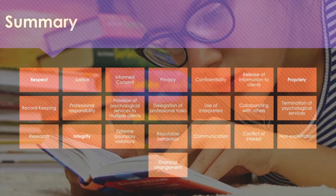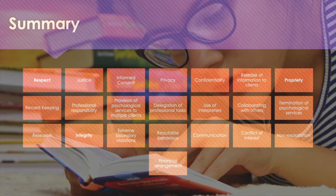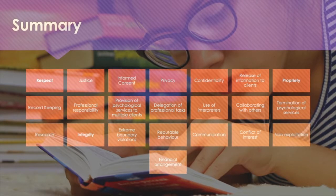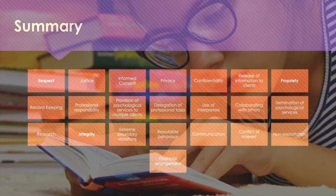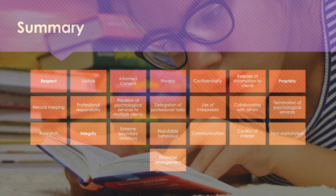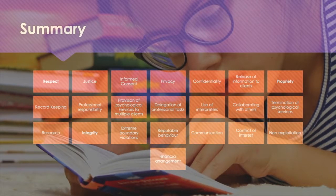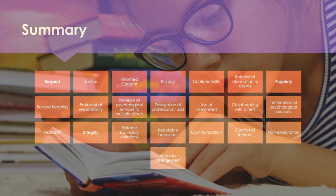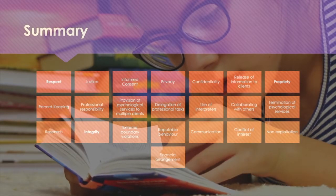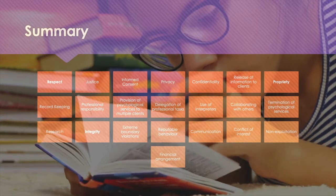The code dictates how one interacts with clients, how one conducts themselves, and addresses multiple relationships. We also looked at General Principle A: justice, respect, informed consent, privacy, confidentiality, release of information to clients, propriety, record-keeping, professional responsibility, provision of psychological services to multiple clients, delegation of professional tasks, use of interpreters, collaborating with others for the benefit of clients, termination of psychological services, research, integrity, extreme boundary violations, reputable behaviour, communication, conflict of interest, non-exploitation, and finally, financial arrangement. Thanks for watching.